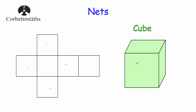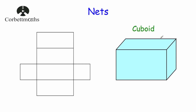This one would be the face at the front of the cube, this square would be the face on the right hand side, this square would be the face on the back, and this square would be the face on the left hand side. And then finally we've got this square which would fold over to be the top — the face on the top of the cube. So this is the net of a cube, and there are different versions of the net of a cube, but this is quite a common one.